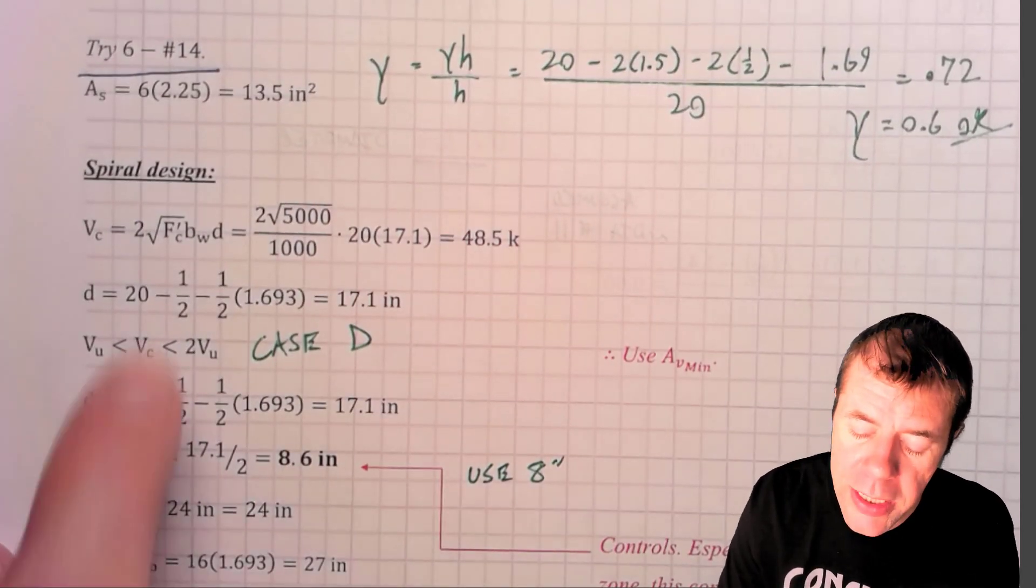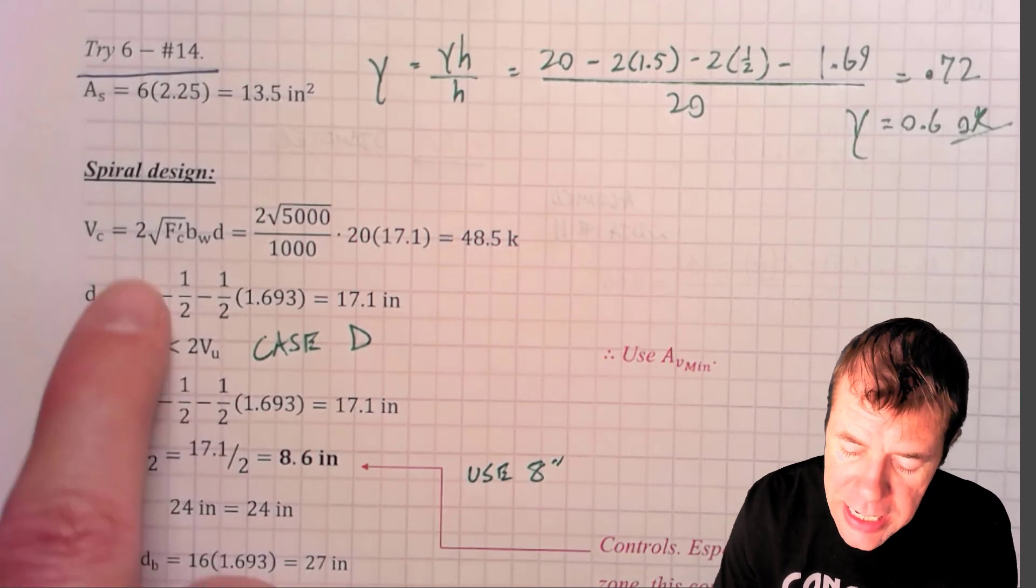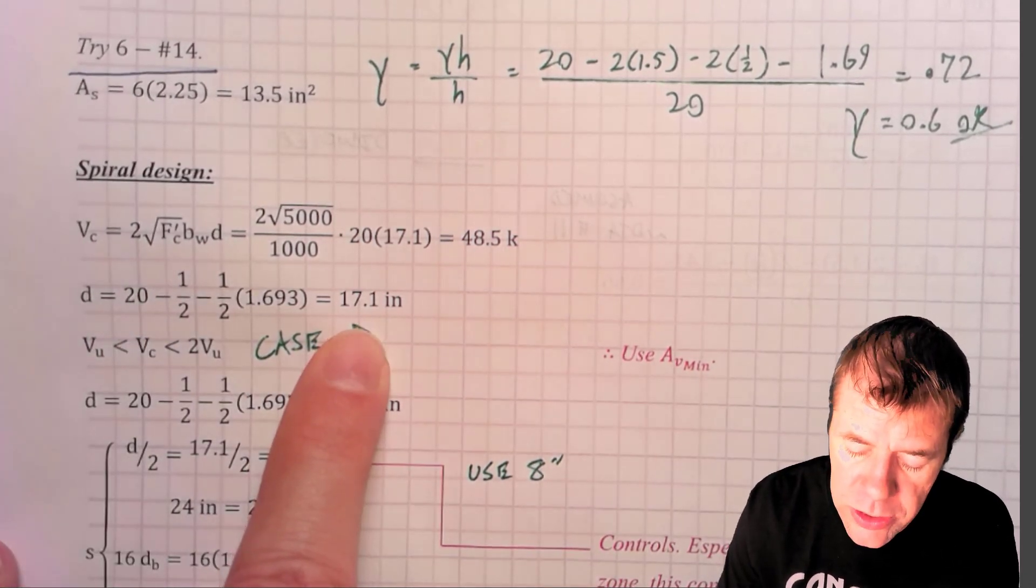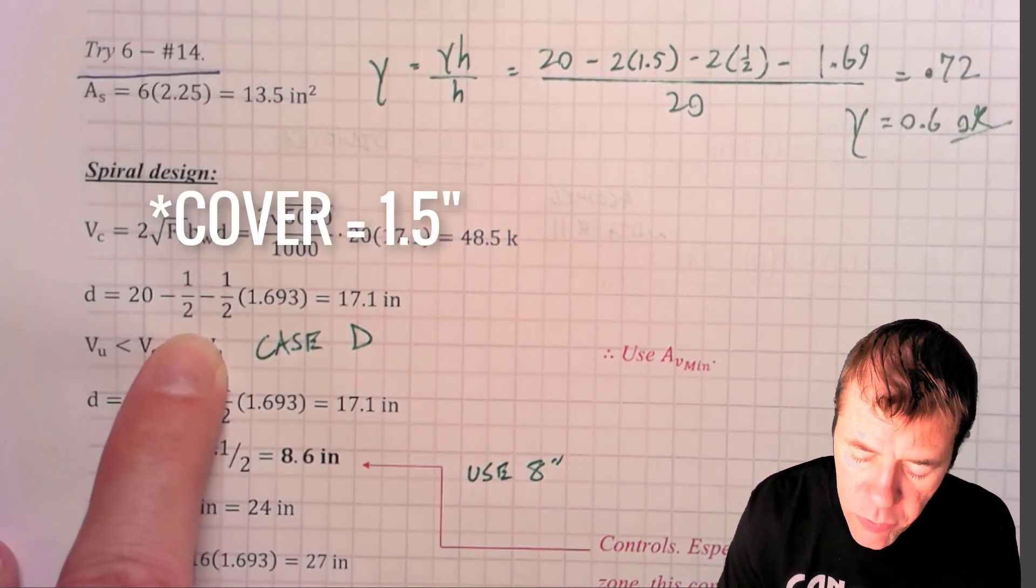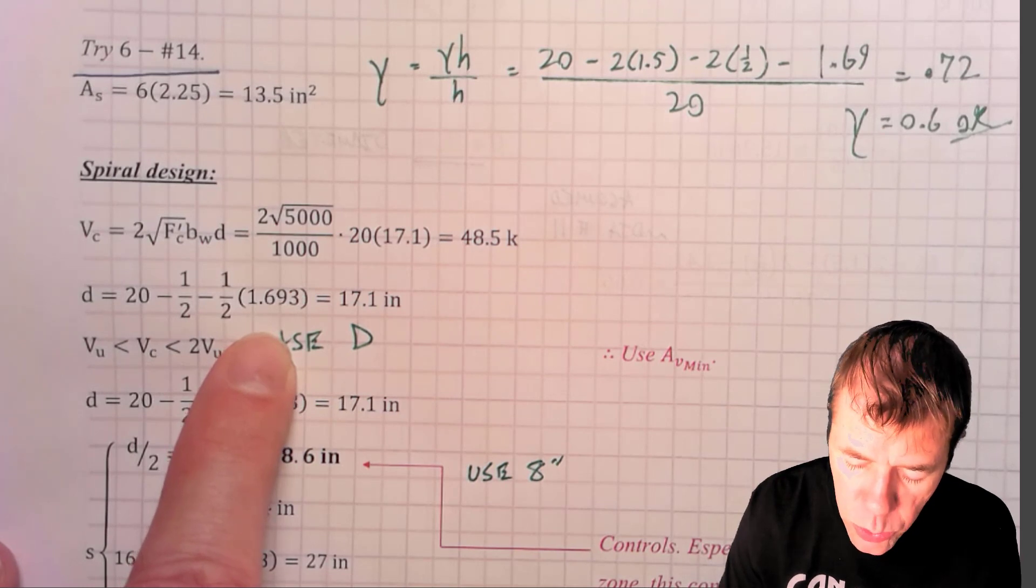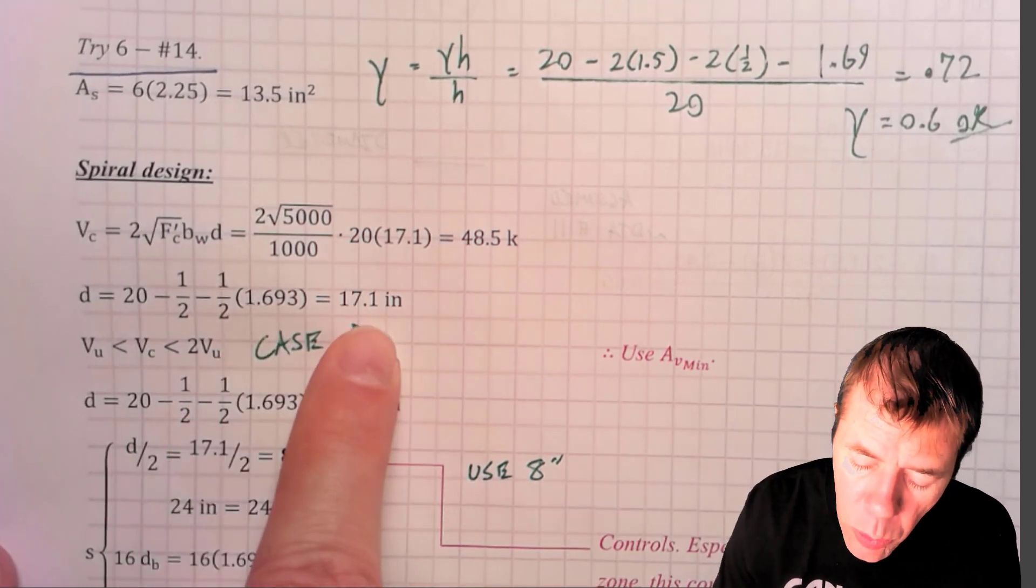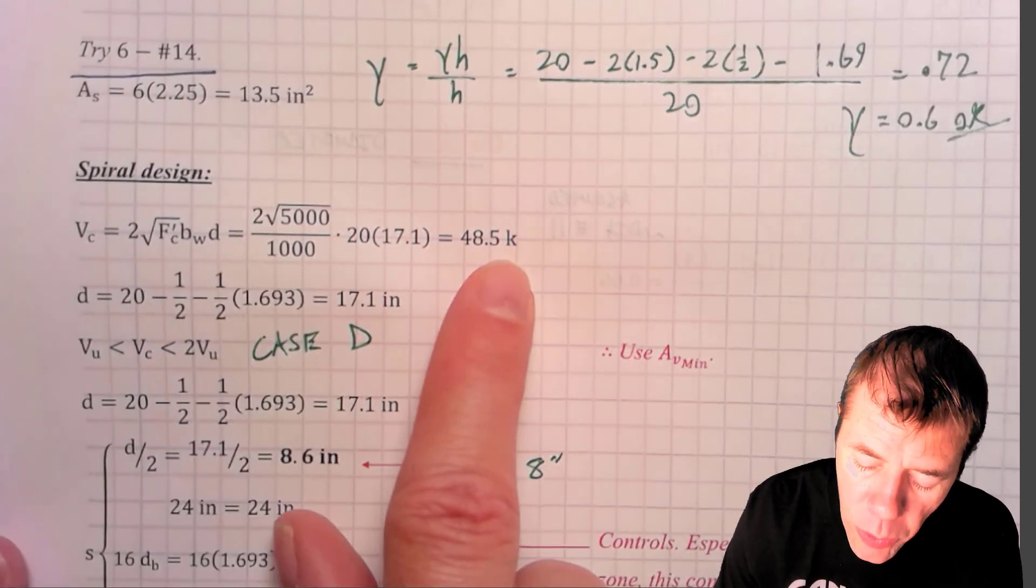Now, the first step here is I'm going to calculate what my V sub C is. And then, to do that, I need my D. So, here is my D, 17.1 inches. That's just my H minus my cover minus one half of my longitudinal bar. And I get 17.1 inches. I plug into this equation here, and I get 48.5 kips.